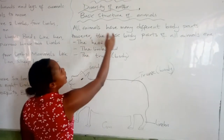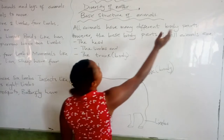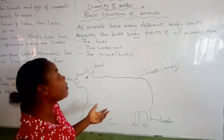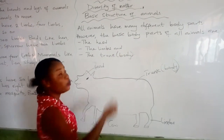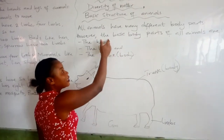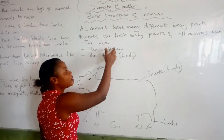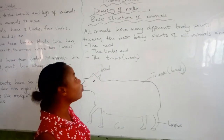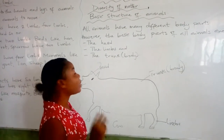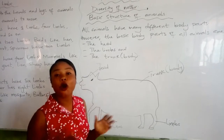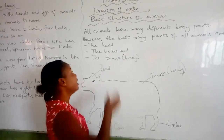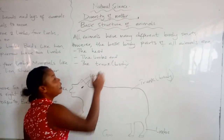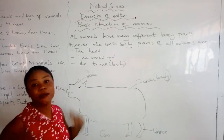All animals have different body parts. However, the basic body parts of all animals are: they have the head, the legs, and the trunk. These are the three main body parts of all animals — the head, the legs, and the trunk. The trunk is the body.